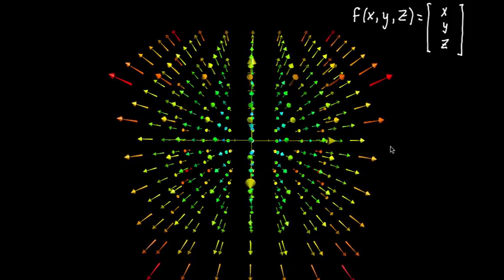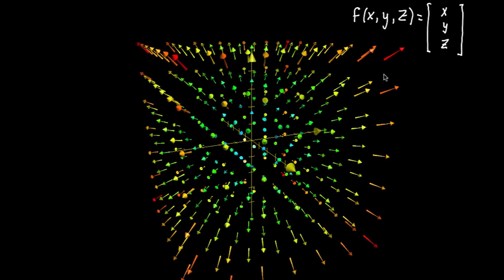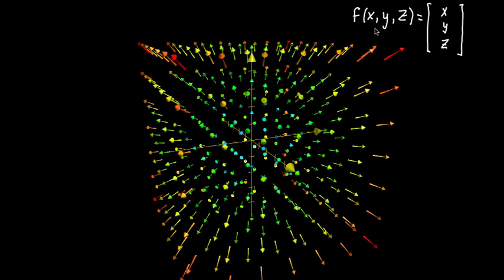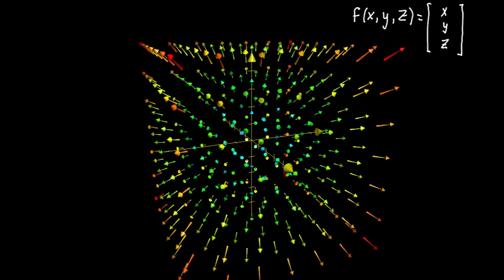So in the last video, I talked about three-dimensional vector fields, and I finished things off with this sort of identity function example, where at an input point x, y, z, the output vector is also x, y, z. And here, I want to go through a slightly more intricate example.